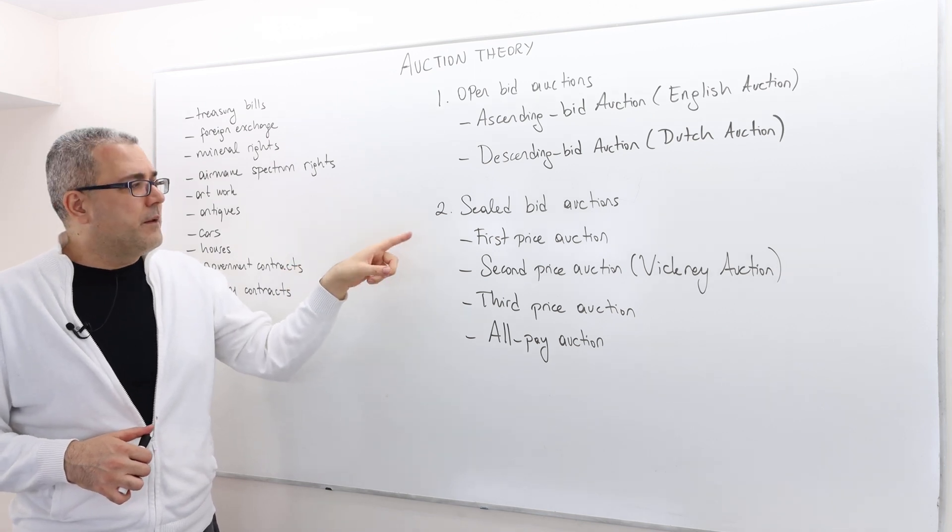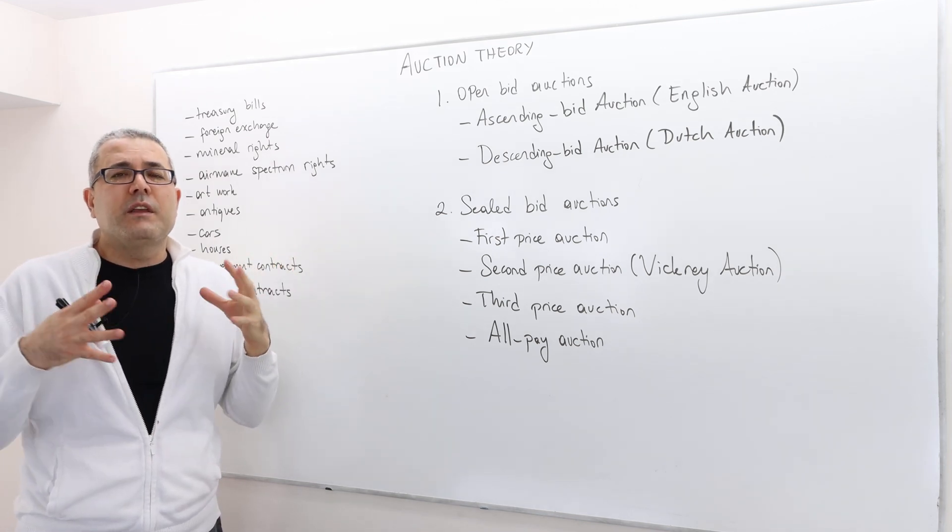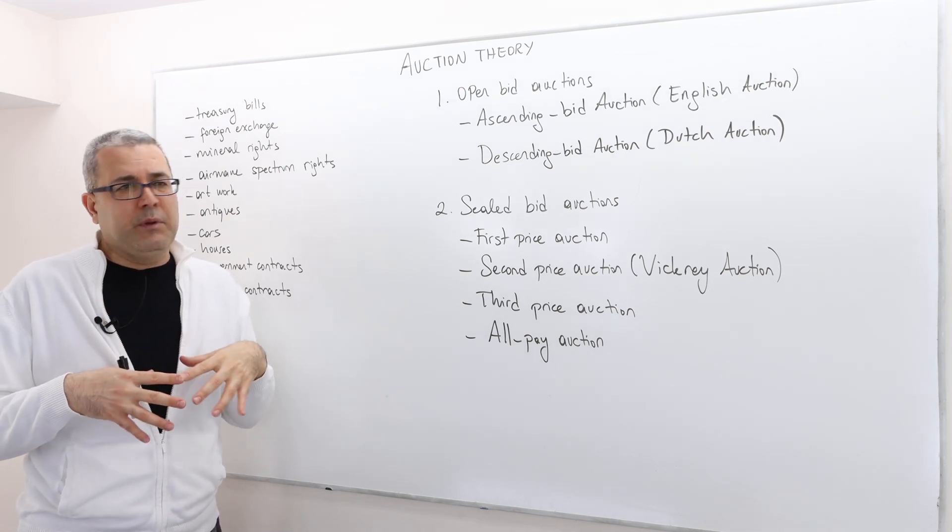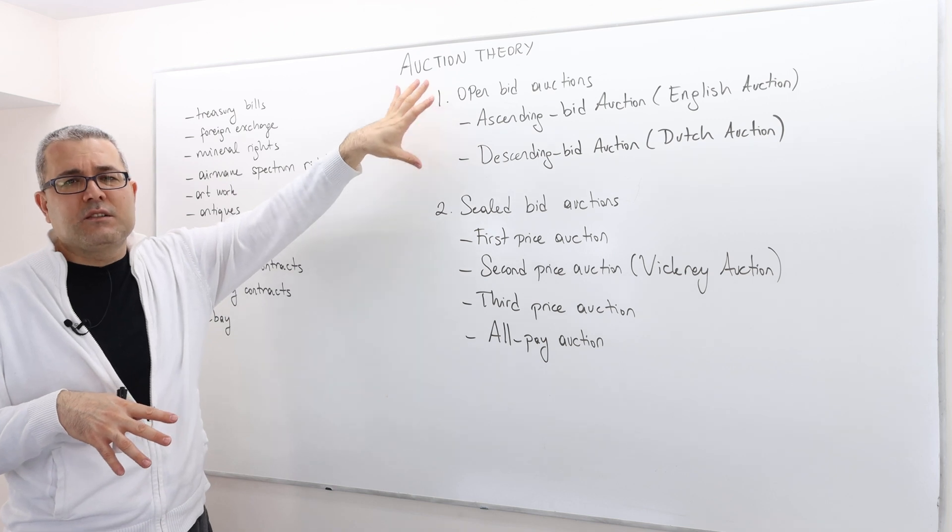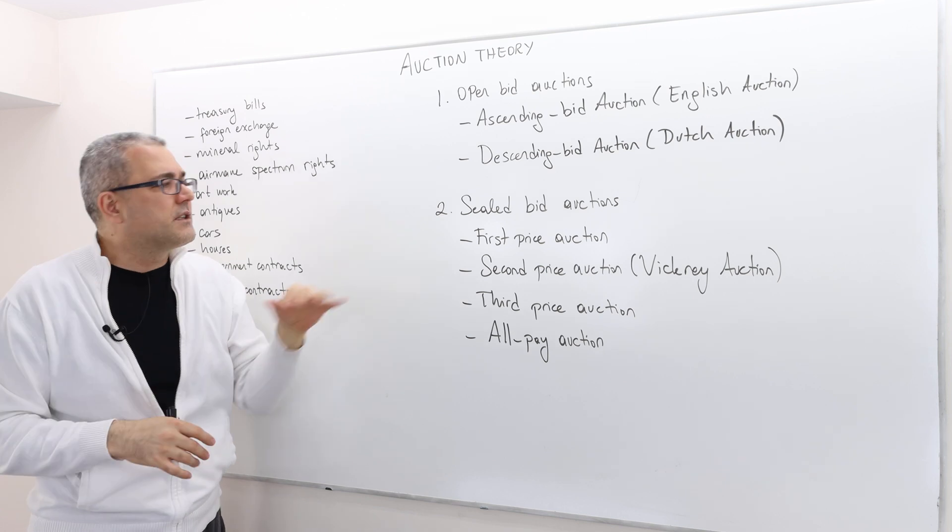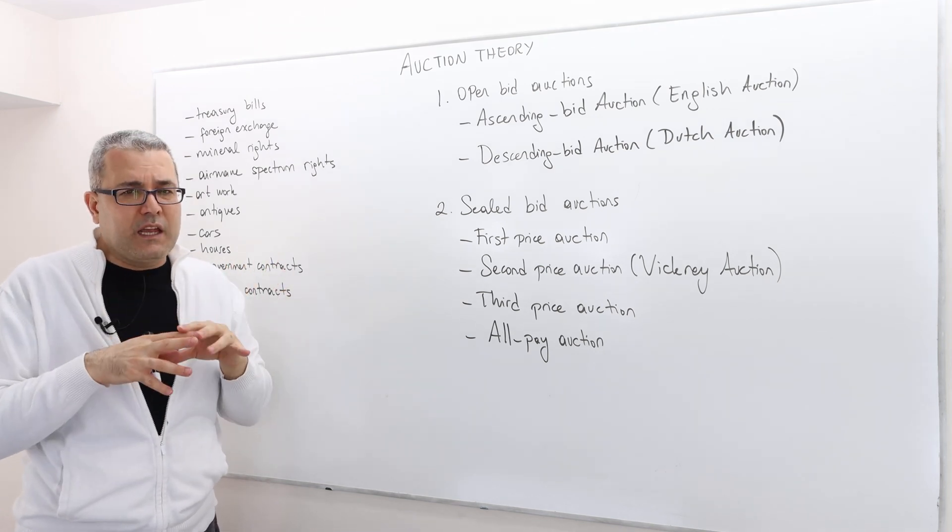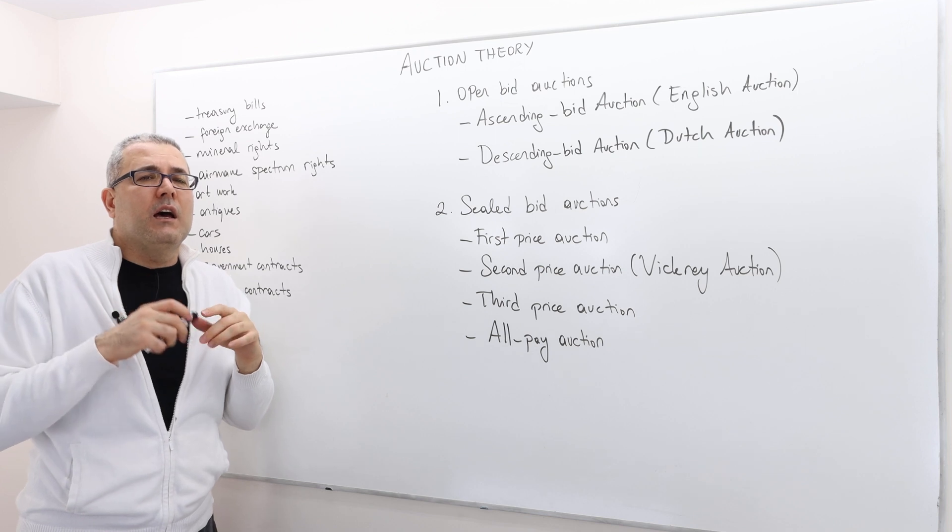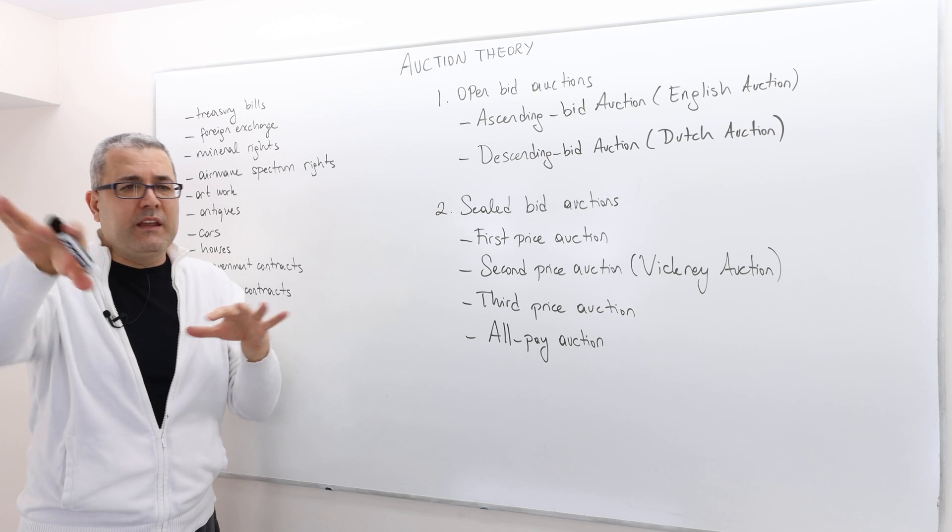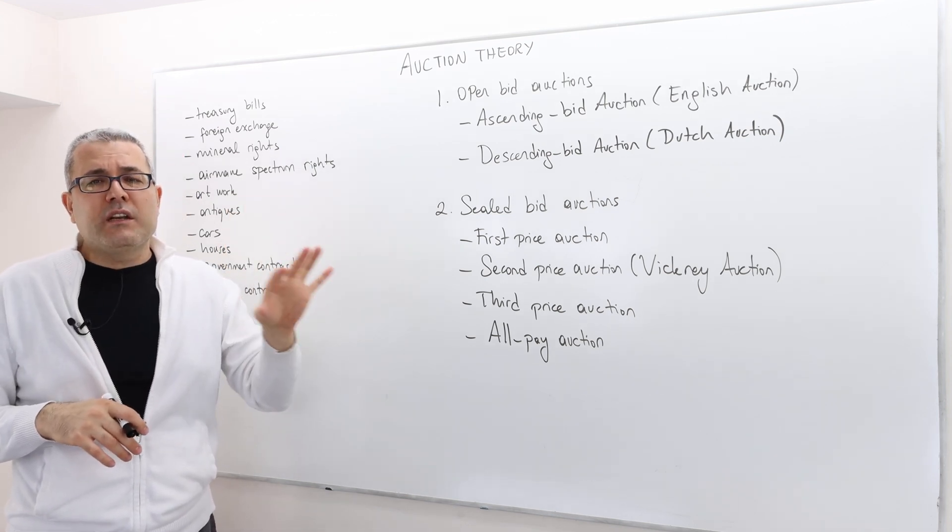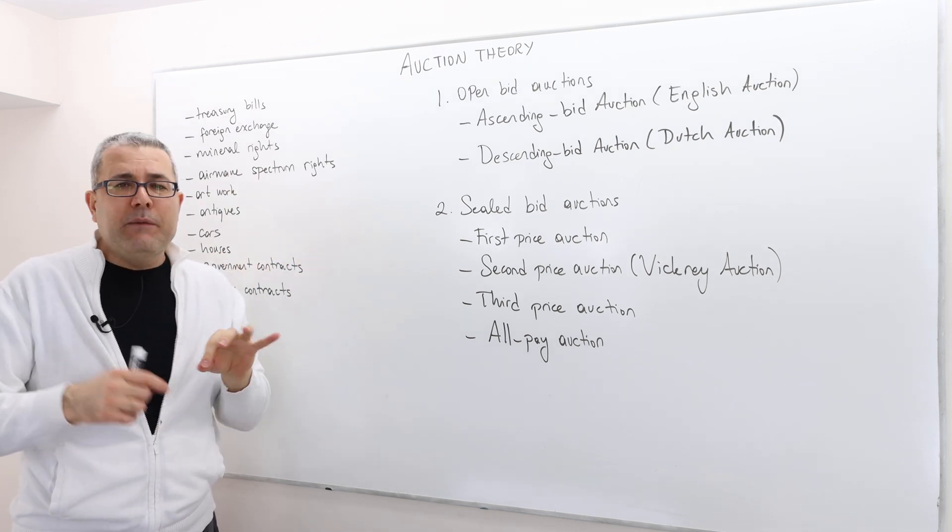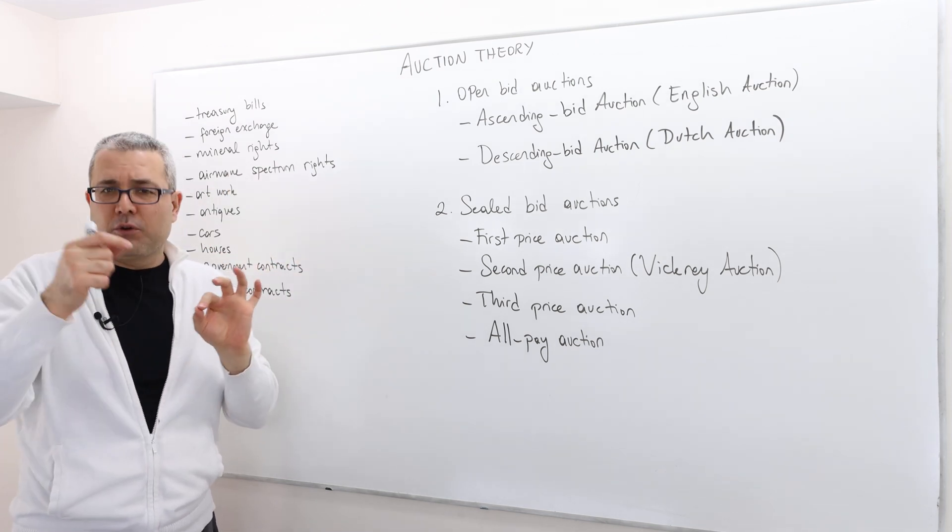The very famous one is the first price auction. So here it is sealed bid auction because everybody simultaneously makes their bid. Here these are sequential. And everybody can observe the bids of the others. Here, however, everything is simultaneous and everybody bids sort of make his or her bids without knowing the others. So in the first price auction, the winner is the bidder who makes the highest bid and he pays his bid.